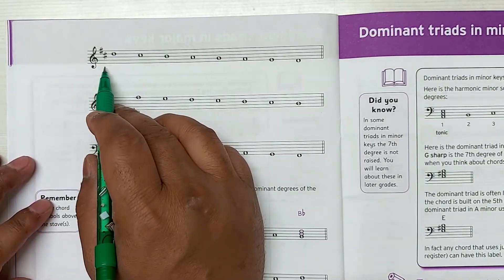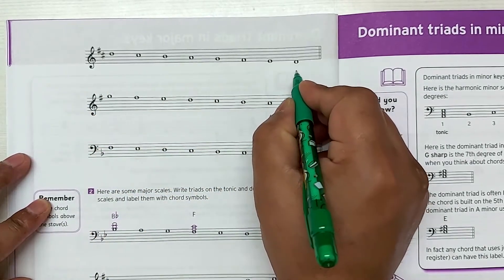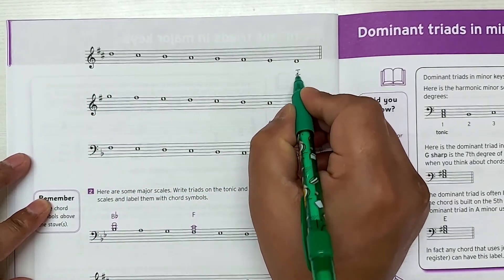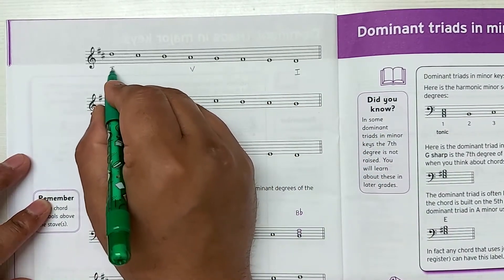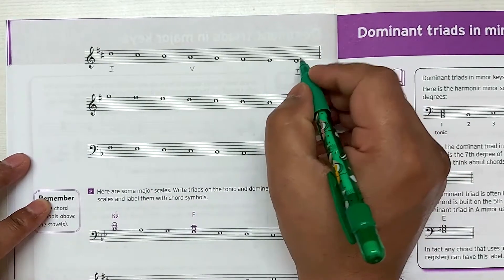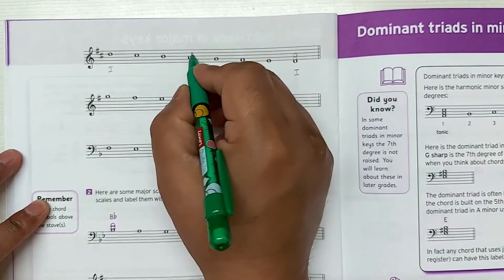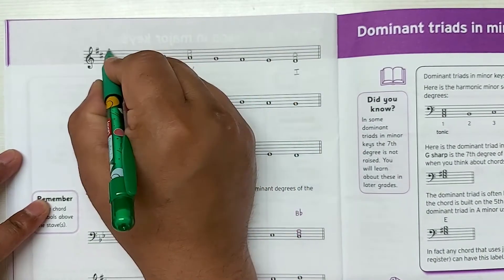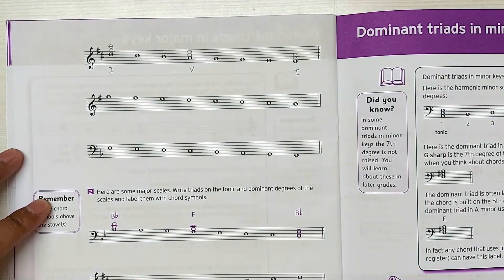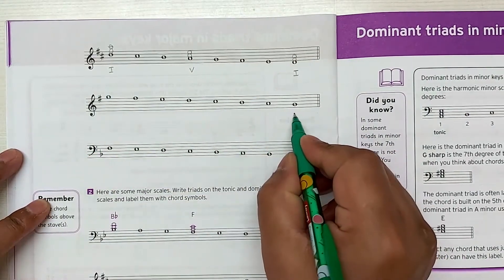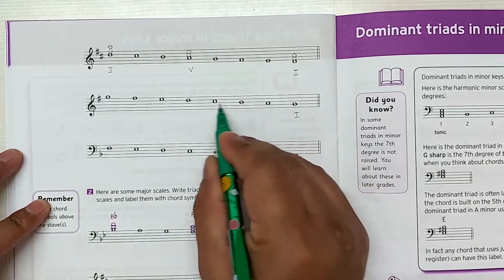Moving to the next page, you can see a key signature is given and we're going from down to up. Make sure you don't count from the wrong note — you count one from here. This is one, two, three, four, five, so this is the dominant, and then the last one is the tonic. Let's put this triad in. Next one, again from down to up, starting from here.